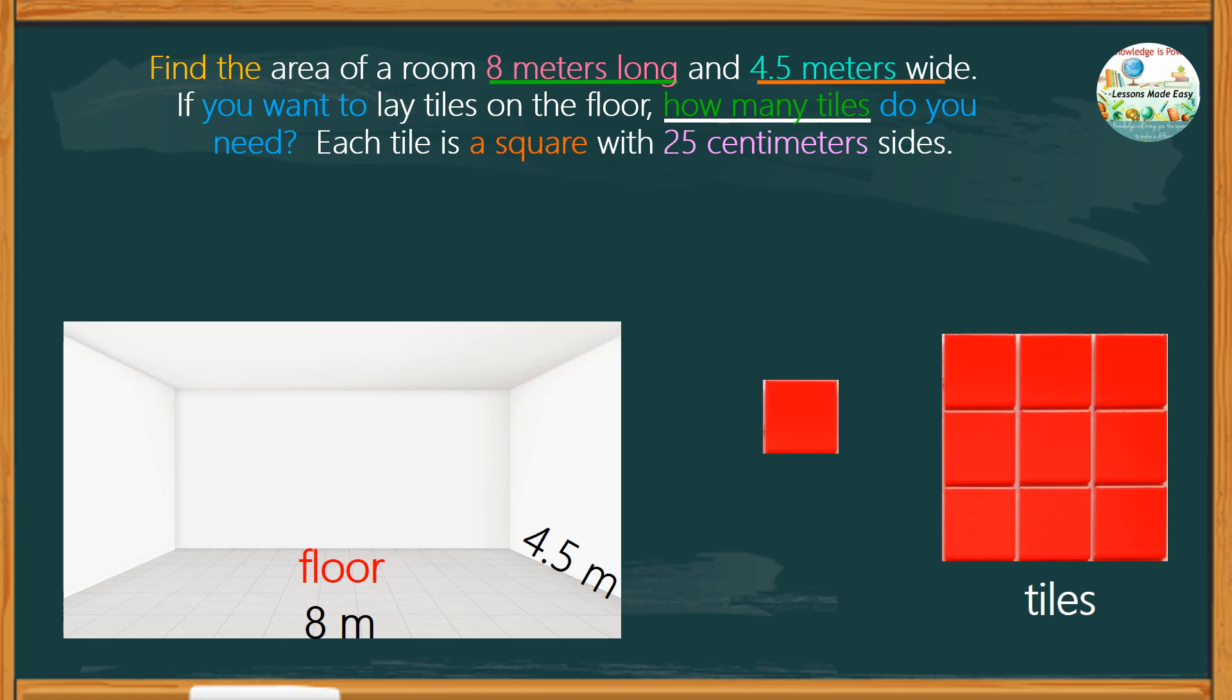Each tile is a square with 25 centimeters sides. To find the number of tiles that we need, we simply divide the area of the floor by the area of each tile.